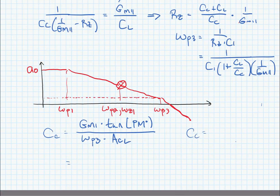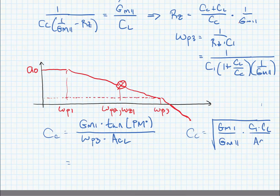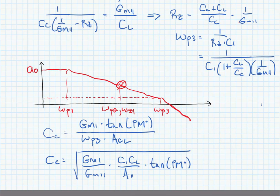We can substitute the value for omega p3 that we just found and we would find that cc is equal to the square root of gm1 over gm2 times c1 times cl divided by our closed-loop gain. And then we need to adjust for the scaling factor due to the phase margin. Now we've added the phase margin compensation.